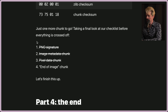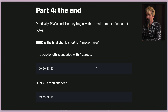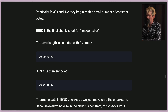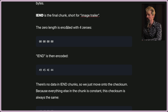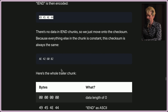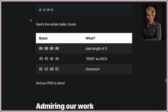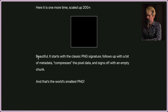Just one more chunk to go: the end of image chunk. Poetically, PNGs end like they began, with a small number of constant bytes. IEND is the final chunk, short for image trailer. The zero length is encoded with four zeros, and IEND is encoded with its four ASCII bytes. Because there's no data in the IEND chunk, we just move on to the checksum. Because everything else in the chunk is constant, the checksum is always the same. And now our PNG is done — it starts with a classic PNG signature, follows up with metadata, compresses the pixel data, and signs off with an empty chunk.